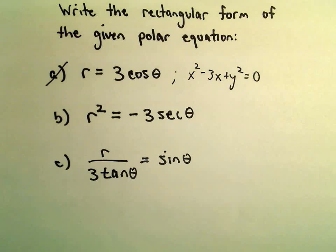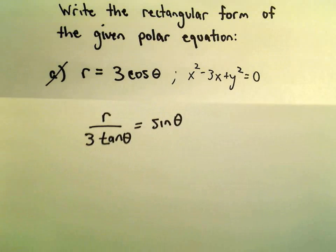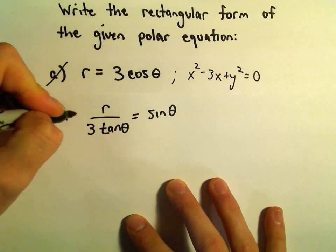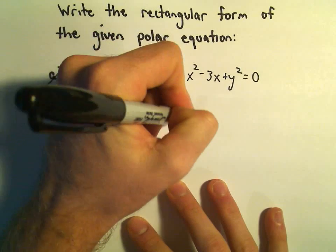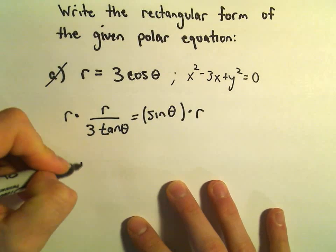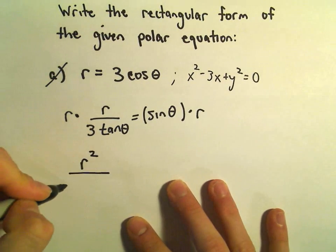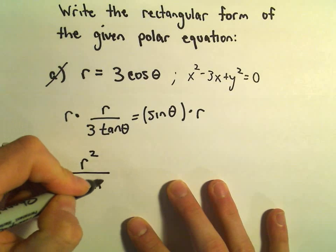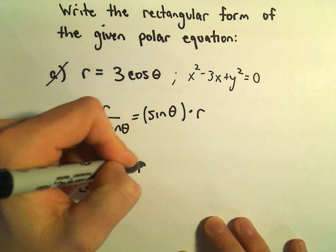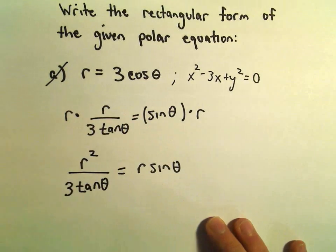If it just said r·sin(θ), I could replace it with y. So that's what I'm going to do. I'm going to multiply both sides by r. So on the left, we'll have r²/(3tan(θ)). On the right, we'll have r·sin(θ).